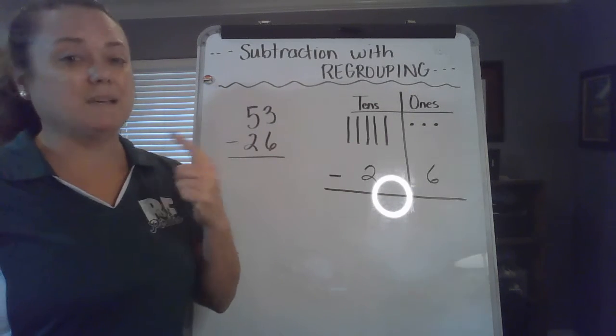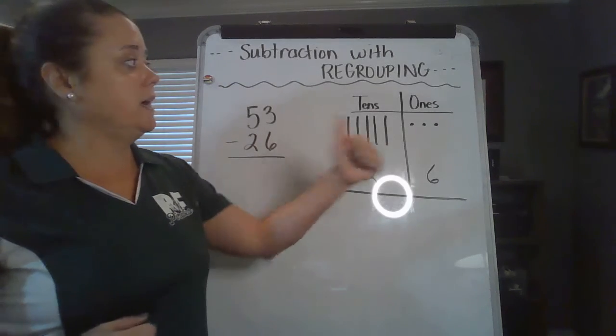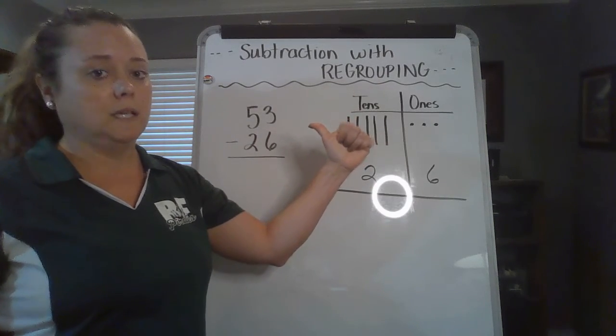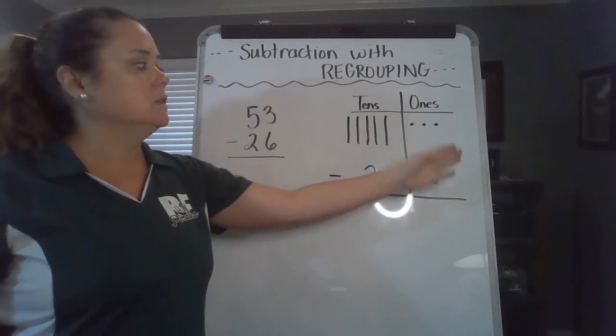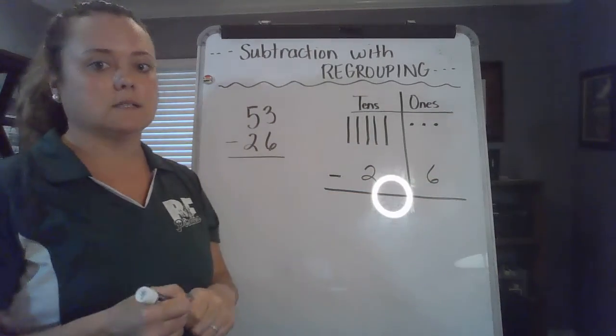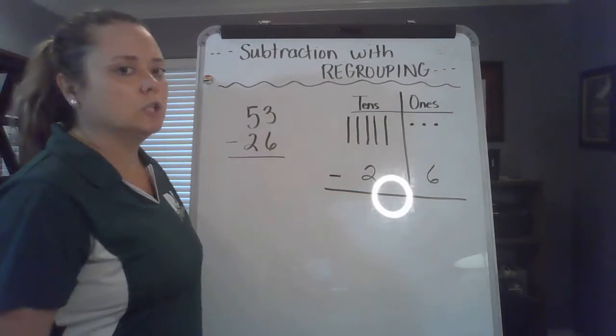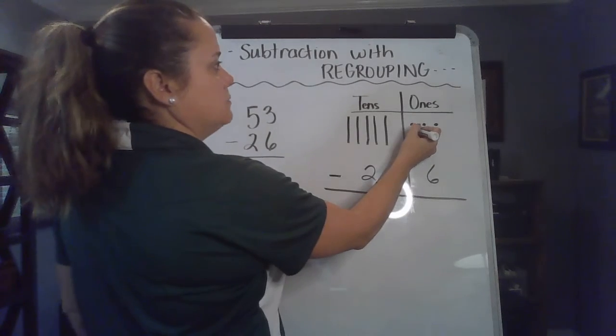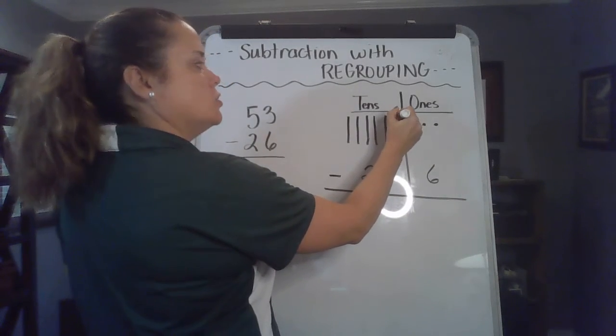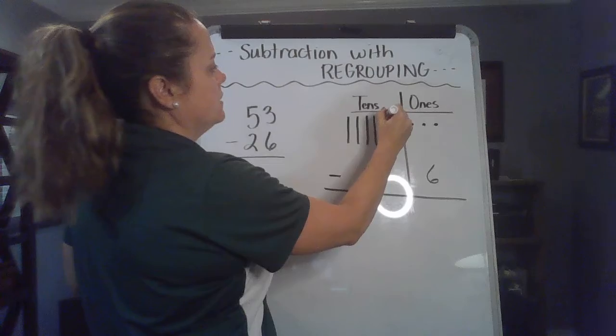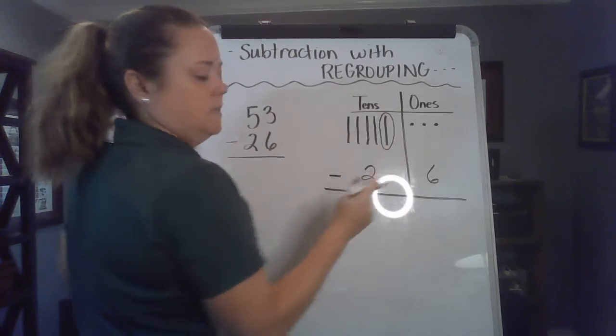I can't give you six dollars if all I have is three dollars. But I can, because I'm a nice person, right? I'm a nice ones place. I can go to my neighbor, the tens place, and borrow so that I can give you six. So this is what that looks like. Hey neighbor tens place, do you have ten to spare? Sure.